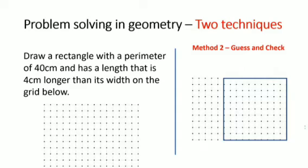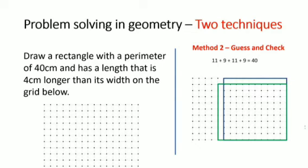If we reduce one side we need to increase another side. So if we reduce one side by one, we need to increase the length by one, giving us this shape in green. Now it is a rectangle, but upon inspection we recognize that the length is now 11 centimeters and the breadth is now 9 centimeters. Although we have the same perimeter, the length is only 2 centimeters longer than the breadth.